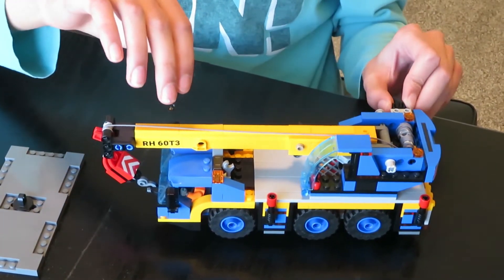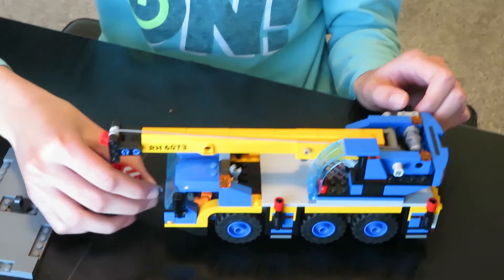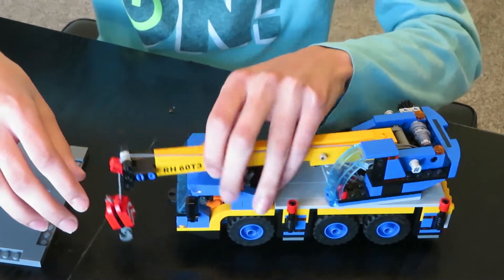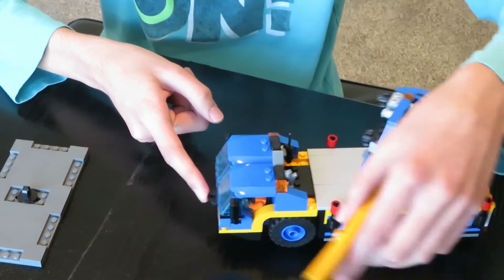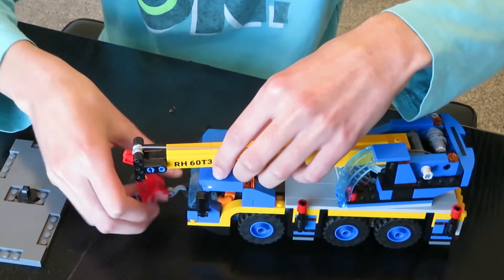We're going to be talking about the components of this and how it works. So first, there's a little hole over here with this black piece. This is where the hook of the cable can sit, like this.